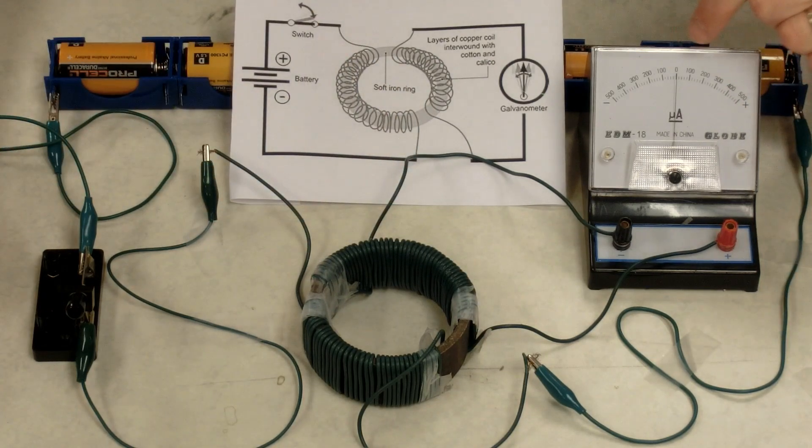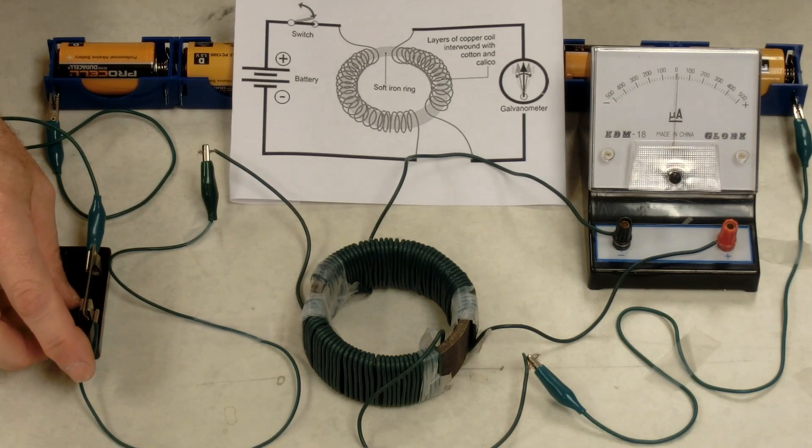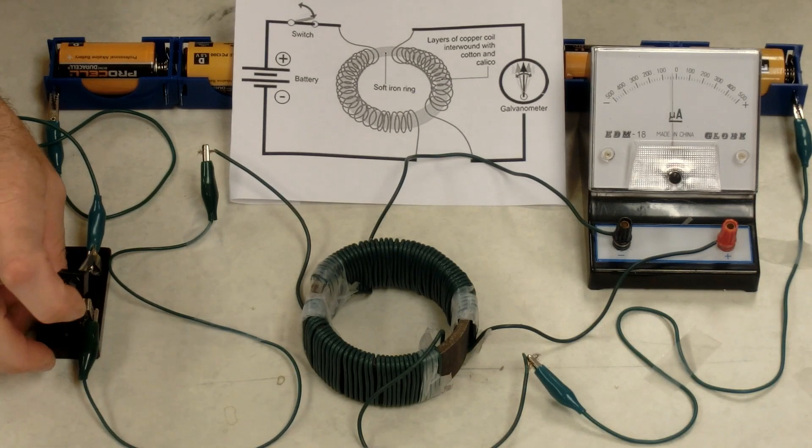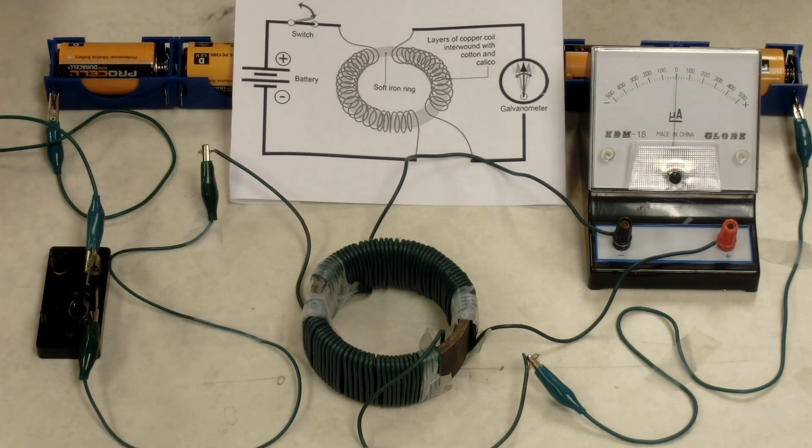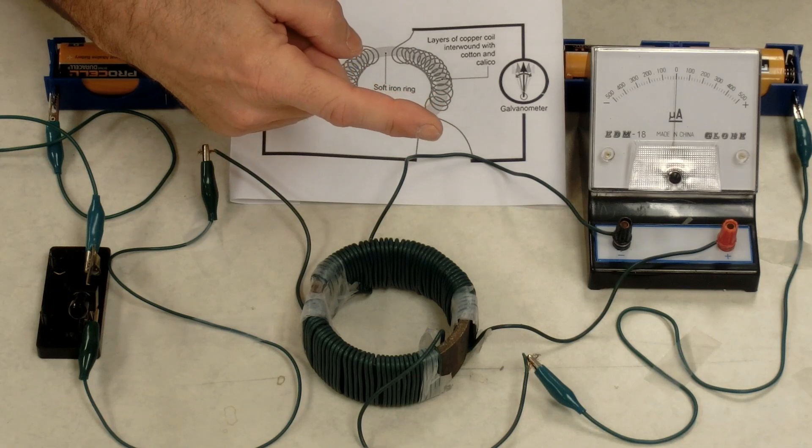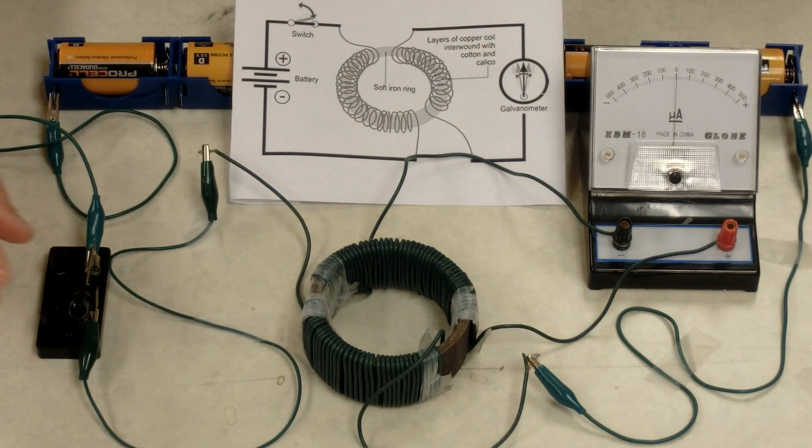The needle deflects opposite directions for when the magnetic field is turned on, built up, and when it's turned off, collapses. That means that the magnetic field traveling one direction creates current in one way, and traveling the opposite direction creates current in the opposite way.